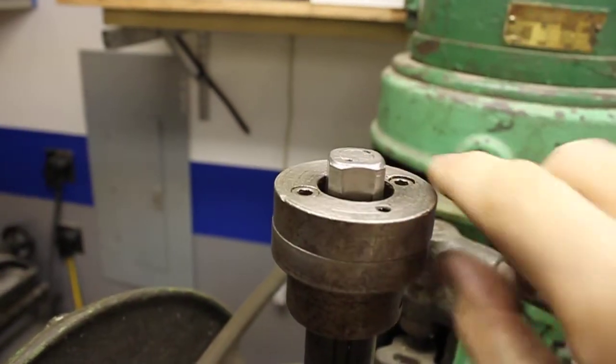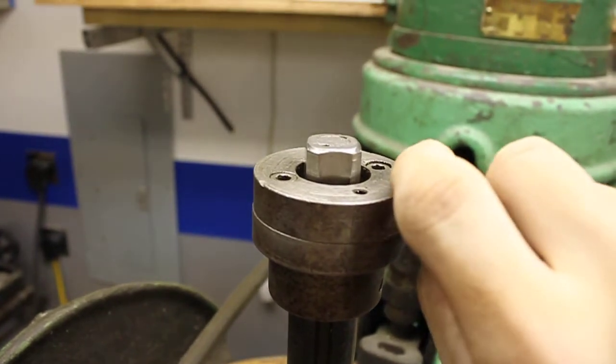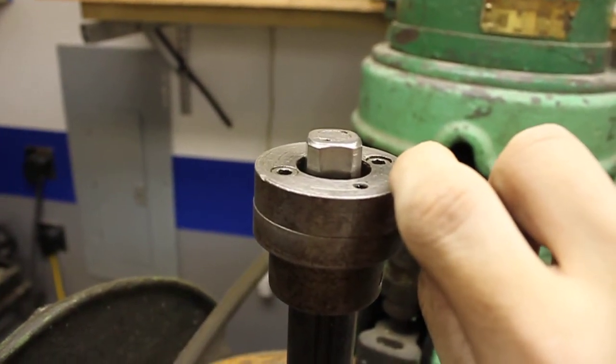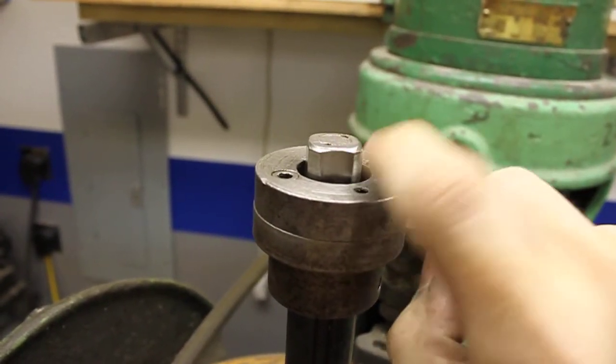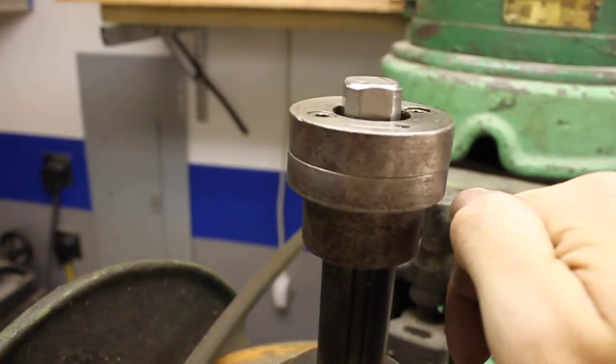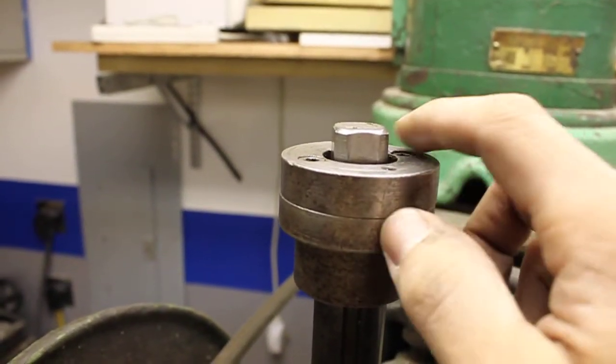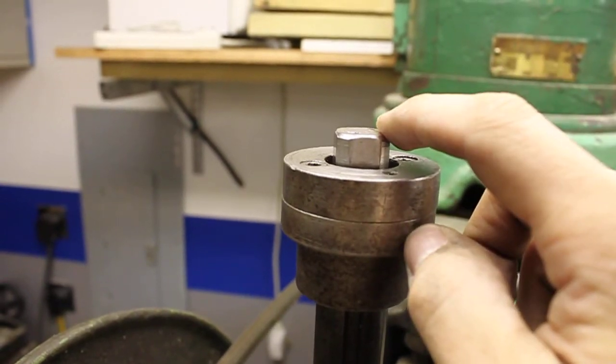You would unscrew it until it hits the spacer here which has a shoulder to capture the drawbar, and then it forces down, forces out the collet and whatever you got in there.